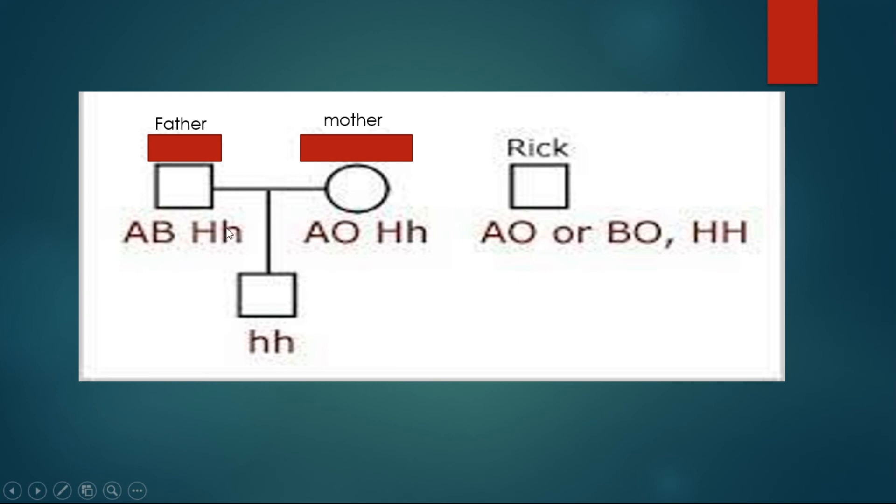When the baby inherits both these mutated genes, then he will have no H antigen. And consequently, when he has no H antigen, he will have no A or B antigen, which are formed after the H antigen has been formed.